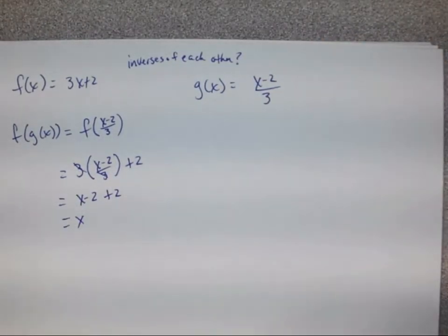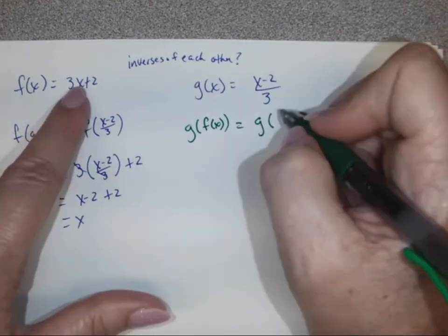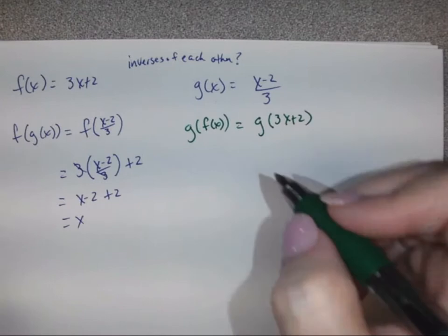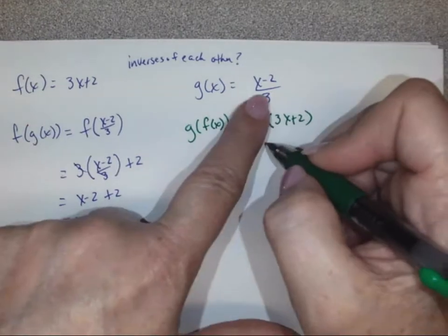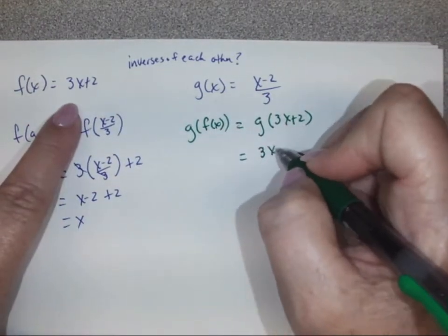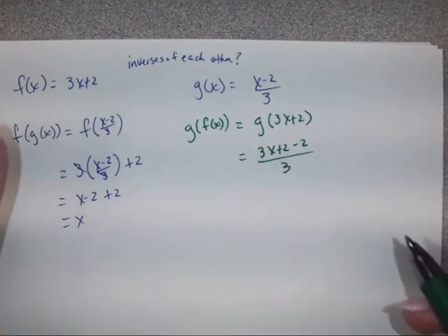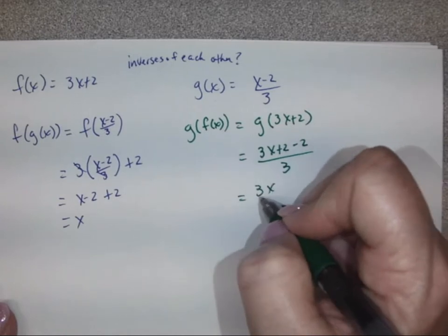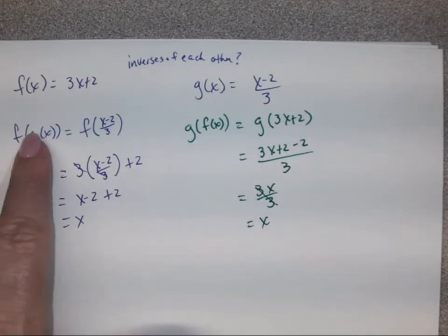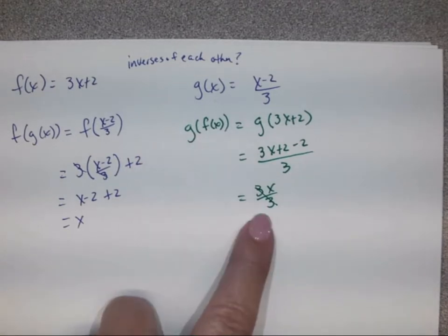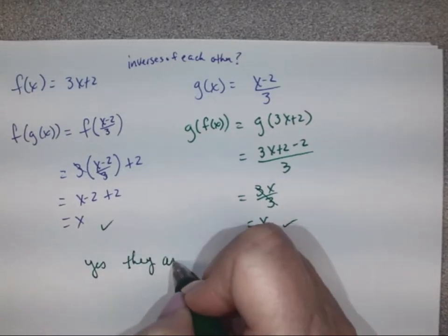On the other side, we find g(f(x)), which means finding g at (3x plus 2). So where the x is, we plug in 3x plus 2 minus 2, all over 3. The 2's cancel and we get 3x over 3. The 3's cancel and we get x. Since both f(g(x)) and g(f(x)) equal x, they are inverses of each other.